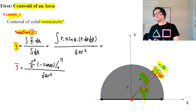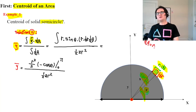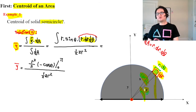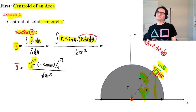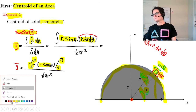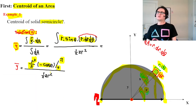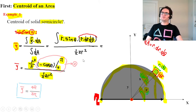Substituting into the formula for y-bar: dA equals r dr dθ. The y-component of position in polar form is r sine θ. Integrating gives r cubed over 3 for the radial part, and negative cosine θ from 0 to π for the angular part. Dividing by the semicircle area, we get the same result: y-bar equals 4r over 3pi.